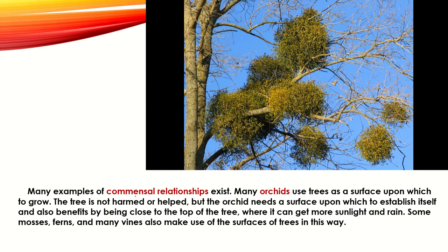Some examples of commensal relationships exist. Some orchids use trees as a surface upon which to grow. The tree is not harmed or helped, but the orchid needs a surface upon which to establish itself and benefits from it. So if an orchid is on a giant tree, the tree is not harmed or helped, but the orchid benefits.